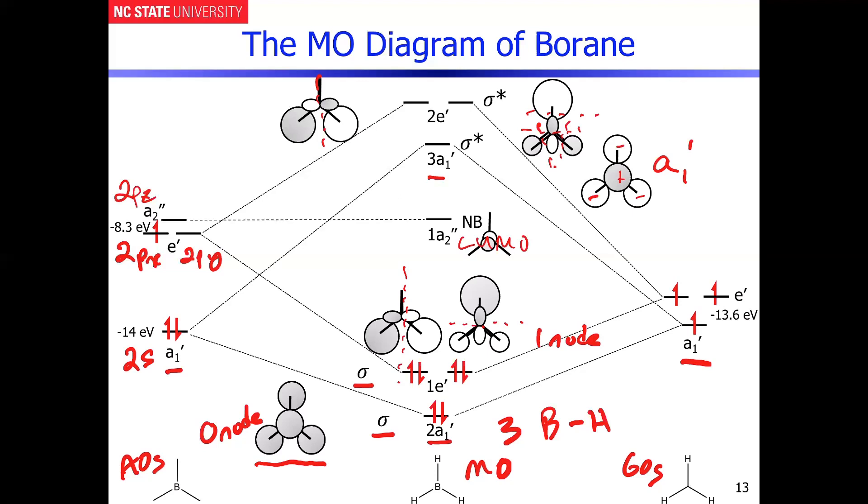You can see the nodal patterns get a little more complicated in these anti-bonding structures. They have numerous nodes, which is suggestive of those being totally anti-bonding interactions. And that is, in summary, the entire MO diagram, energetically and pictorially represented for borane.